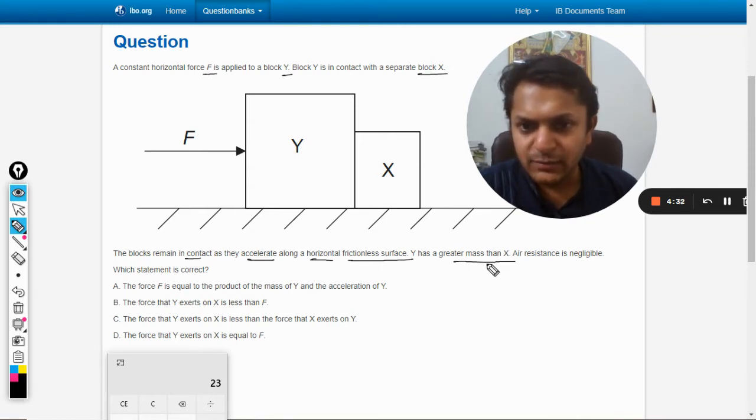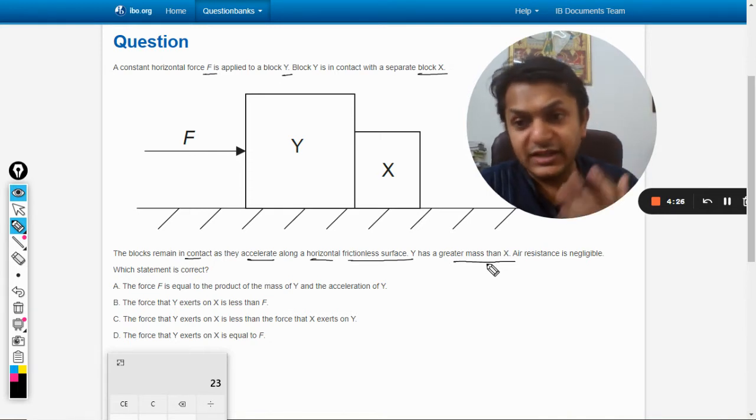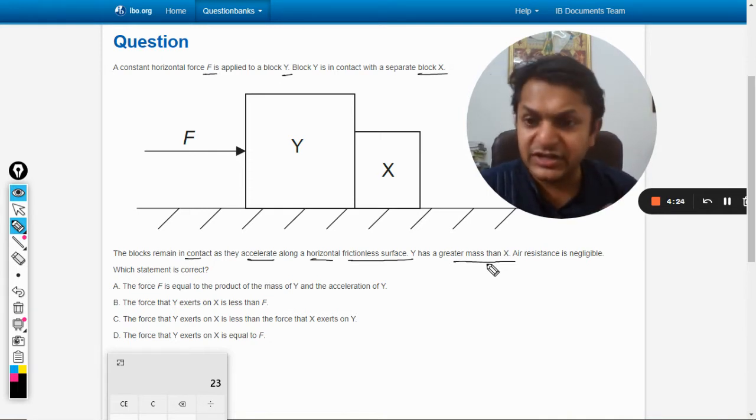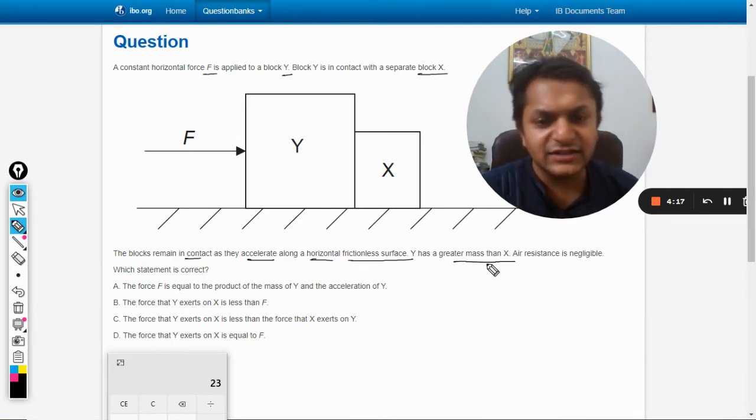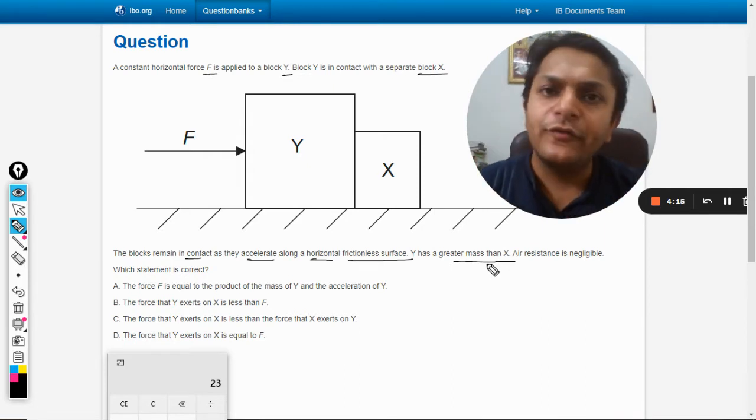Which statement is correct? The force F is equal to the product of mass M and acceleration Y. The force that Y exerts on X is less than F. Well definitely this will be the correct answer but we will see how. The force that Y exerts on X is less than the force that X exerts on Y? No. Okay, we will go for all the options one by one.